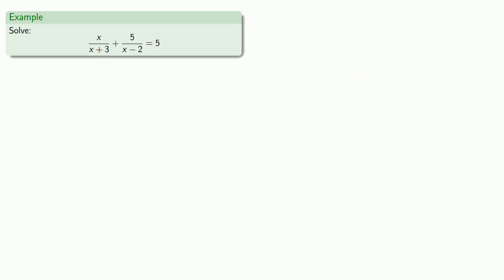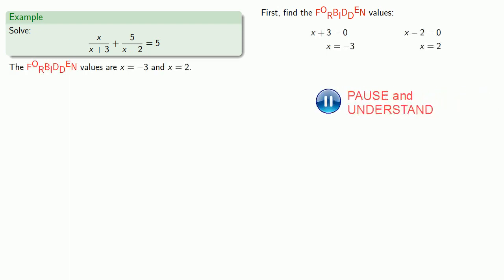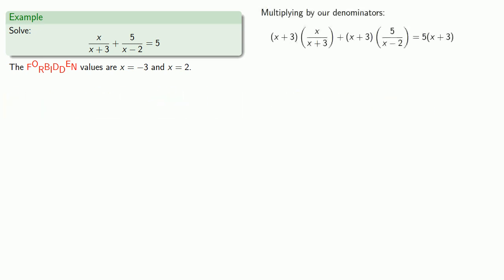Or let's take a look at this equation. So first, we'll find the forbidden values, those that make the denominator equal to zero. That would be x equal to negative three and x equal to two. We'll multiply through by our denominators, x plus three. And then x minus two.